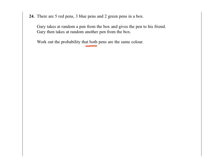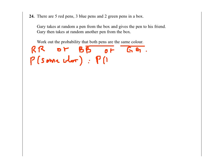We need to work out the probability that both pens are the same colour. So they could be red and red, blue and blue, or green and green. So the probability of having pens of the same colour will be the probability of red and red, plus the probability of blue and blue, plus the probability of green and green.